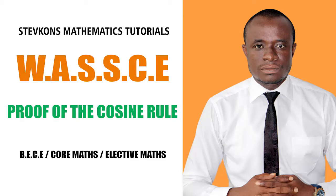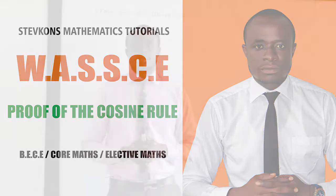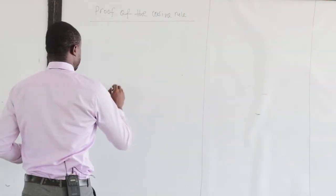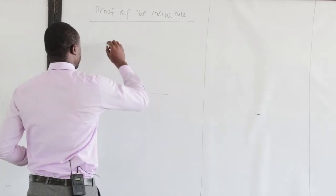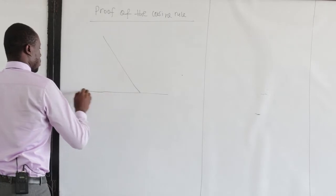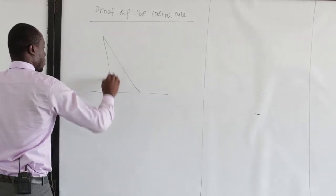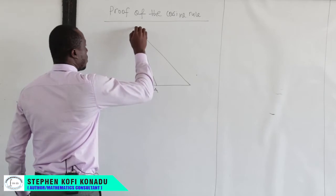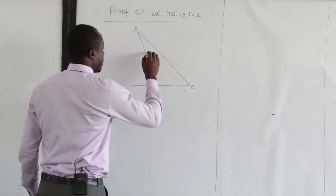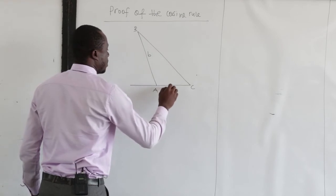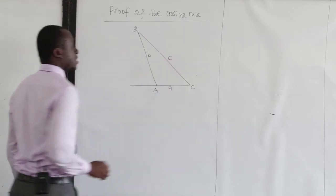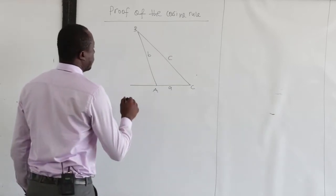Today we look at the proof of the cosine rule. Let's consider a triangle. Let's suppose that this is A, this is B, and this is C. Let's suppose that the side here is b, the side here is a, and the side here is c.